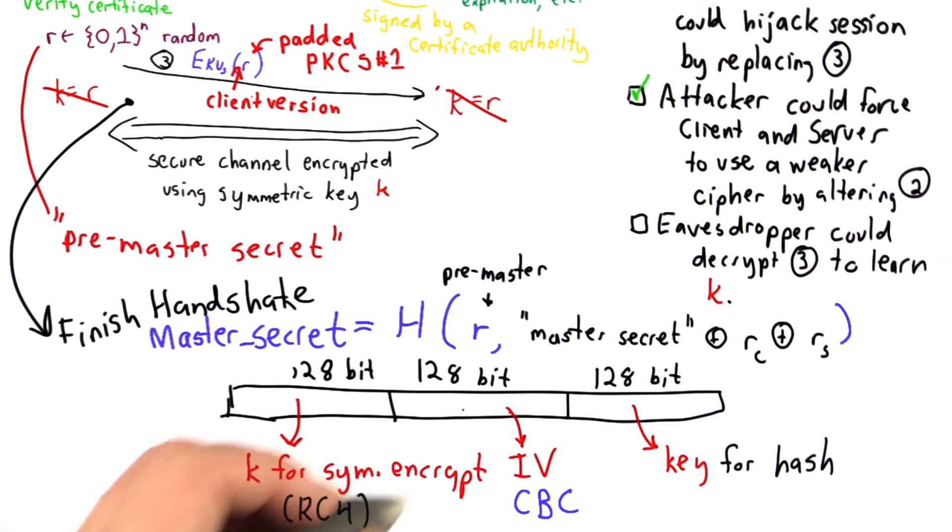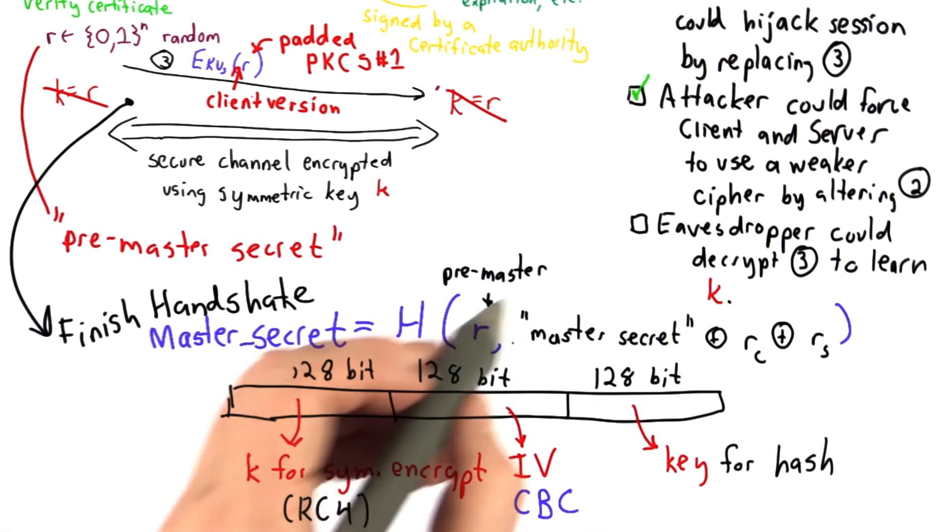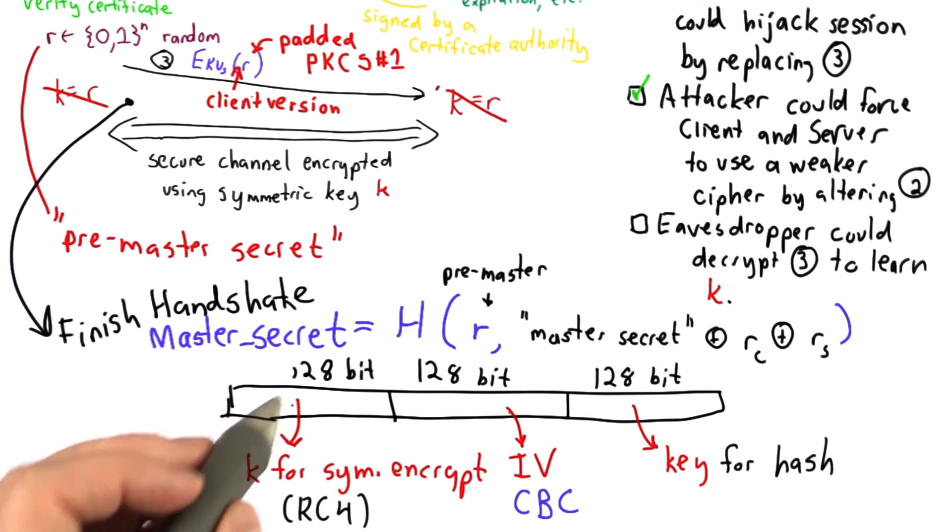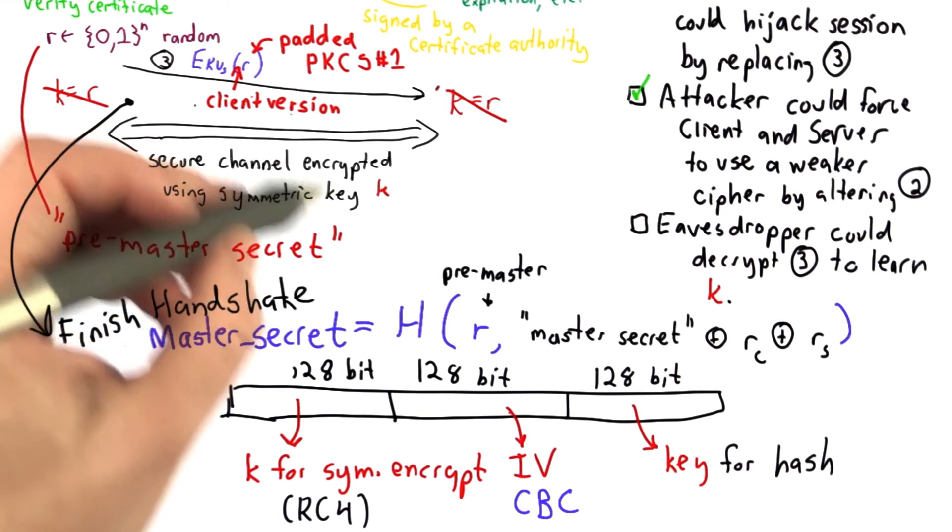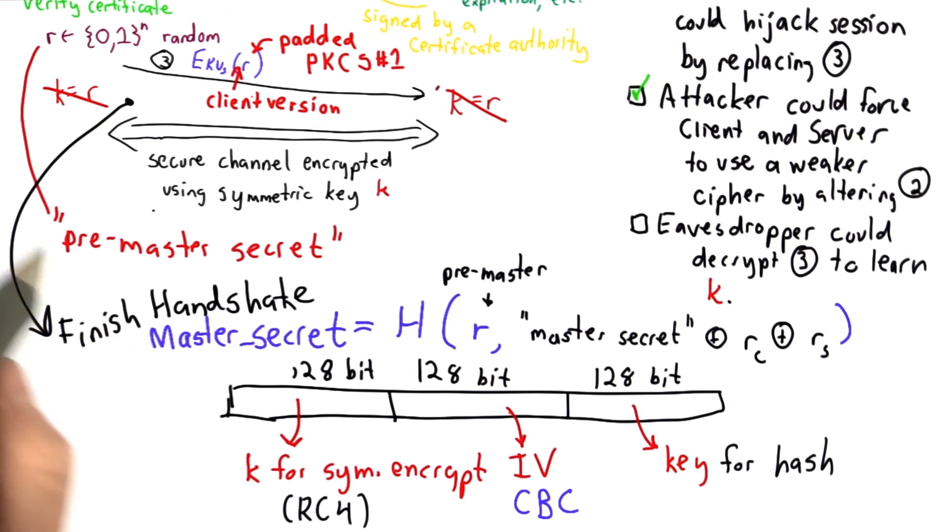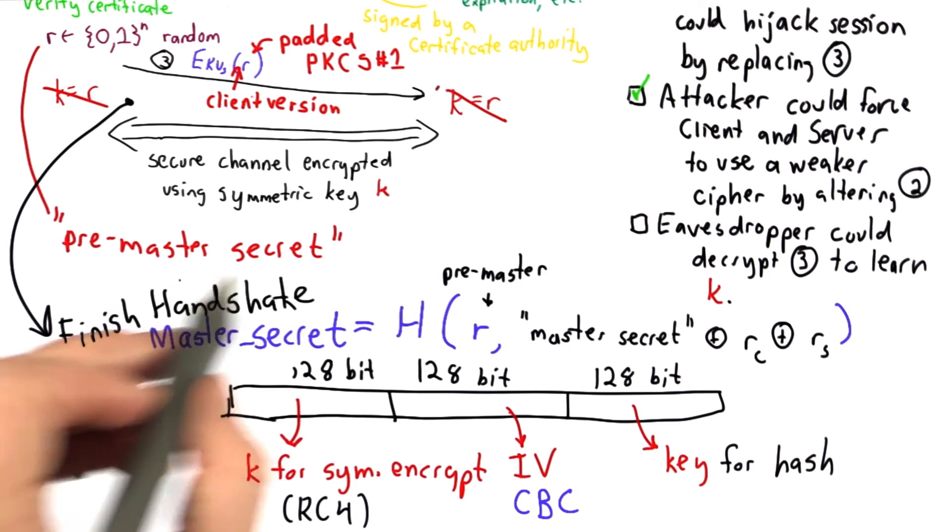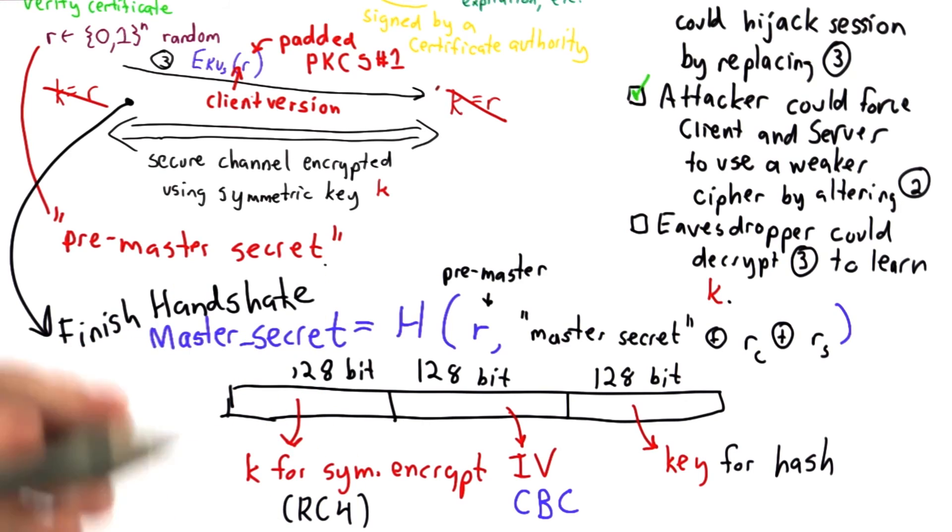That means if any of these values were tampered with, that key would be different, the handshake would never be finished, and there would never be any secure communication sent using that key because both parties verify the handshake before continuing.